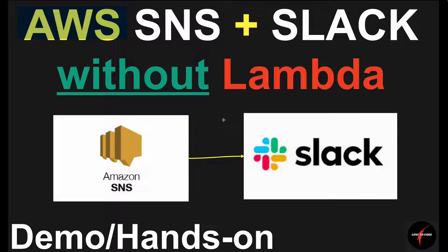Today I'm going to show how to integrate AWS SNS with a Slack channel without Lambda. Why do we need Lambda? Whenever we add Slack as a subscription for an SNS topic, the SNS topic sends a subscription confirmation message, but the message sent from SNS — Slack cannot read or interpret it. That's where people start using Lambda to integrate SNS with Slack.